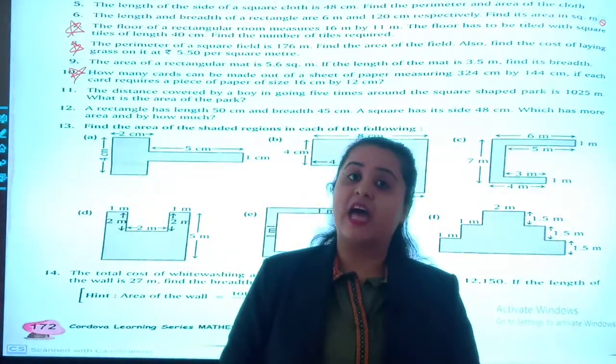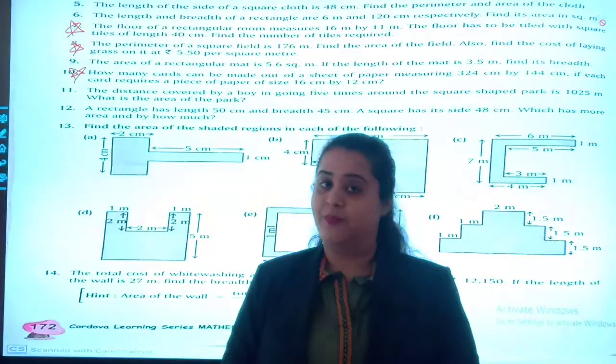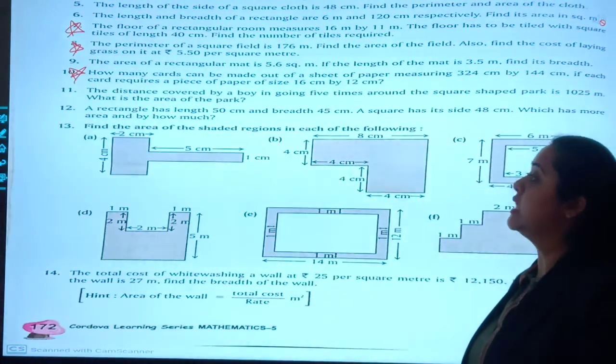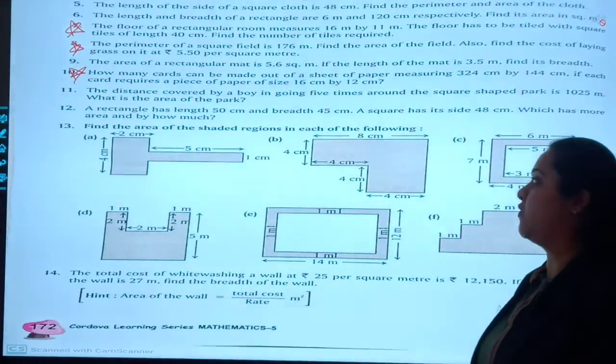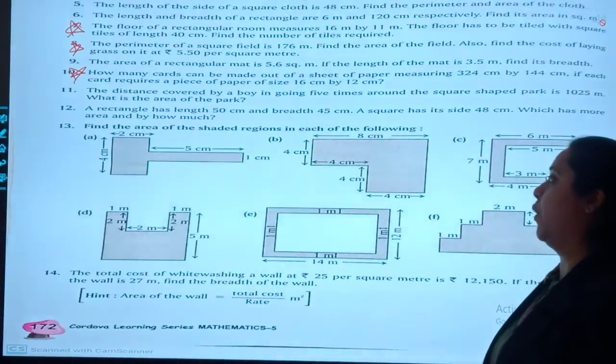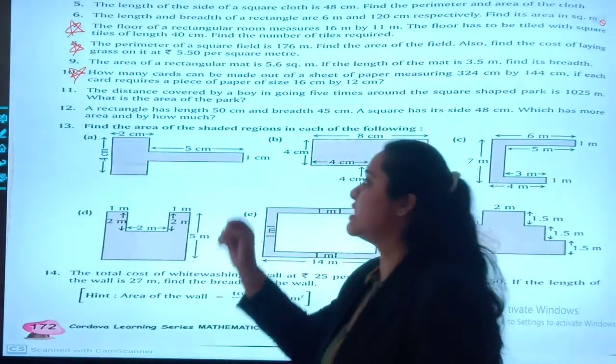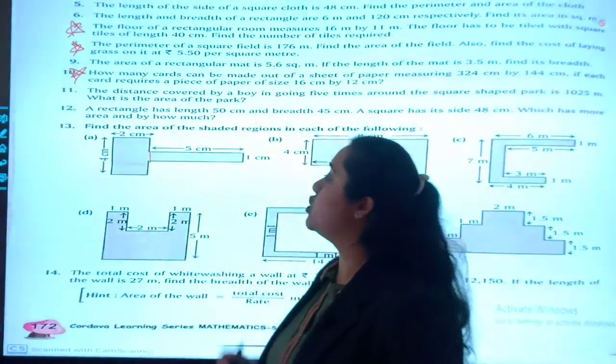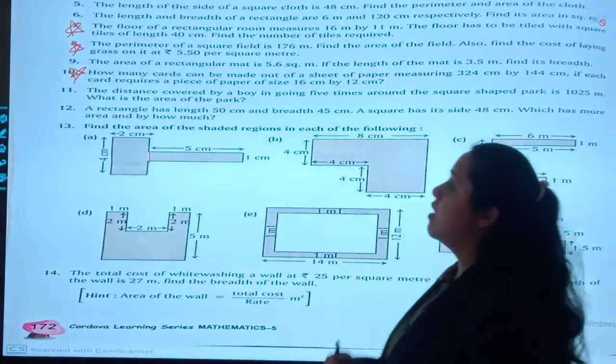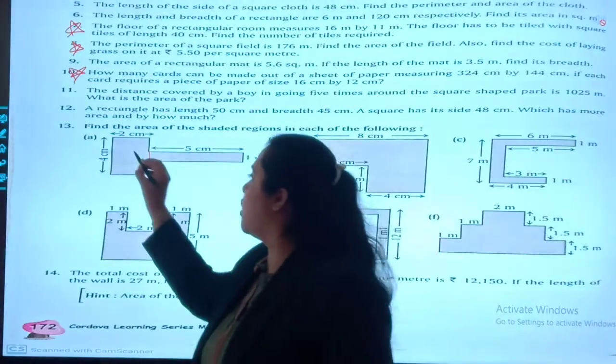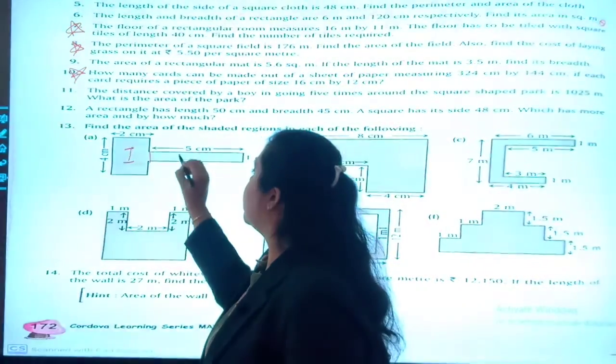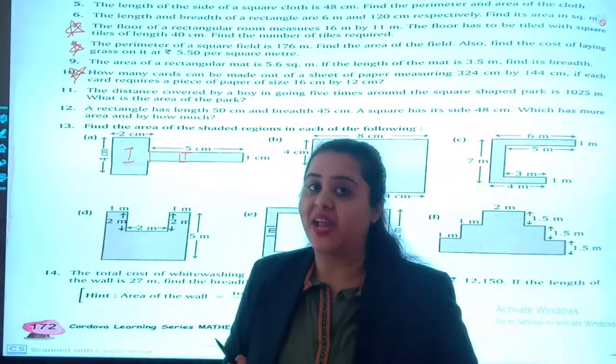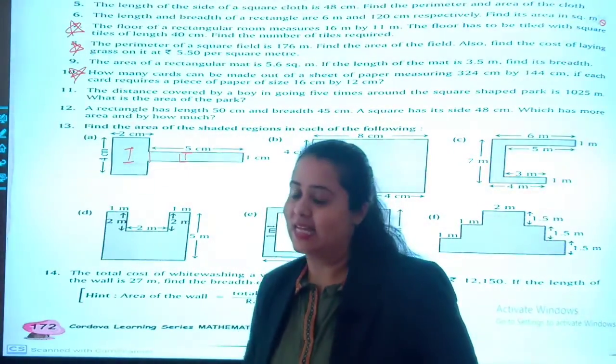We first found the area of the floor, then we found the area of one tile, and then we divided both. That type of sums are question number 7, 8 and 10. Please have a look on that and practice these types of sums. In question number 13, you are supposed to find the area of shaded region in each of the following. As you can see, there are two rectangles. So first, this will be your first rectangle, then this will be your second rectangle.